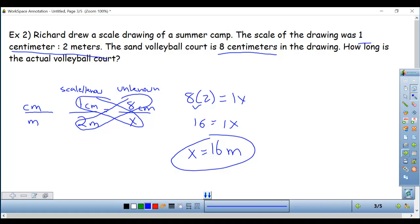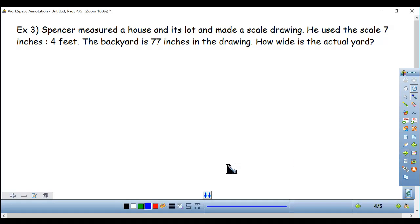Okay number three. If you want to attempt it, if you think you've got a good grasp on equations, go for it. This one is going to be just a tad different. Set up my proportion. What I know for my scale and my unknown on the right. Spencer measured a house and its lot and made a scale drawing. He used the scale seven inches is four feet. The backyard is 77 inches in the drawing. How wide is the actual yard? First thing I'm going to do is look for my scale.